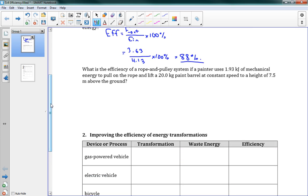We'll try another one here. It says what is the efficiency of a rope and pulley system if a painter uses 1.93 kilojoules of mechanical energy to pull on the rope and lift a 20 kilogram paint barrel at a constant speed to a height of 7.5 meters above the ground. Okay, so what's going on here? He's lifting a paint barrel some distance, 7.5 meters above the ground. So we need to figure out the energy out. We're given the energy in. This is how much input he's giving. We need to figure out how much energy out we're getting. So he's lifting this paint barrel.